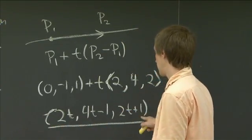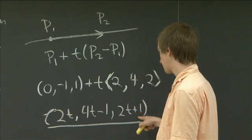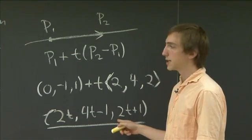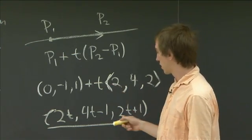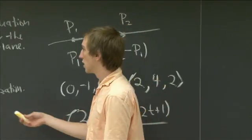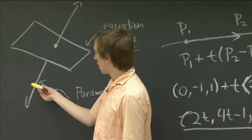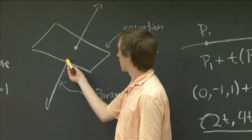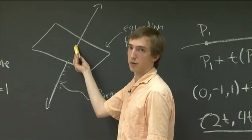So this here is a parametrization of the line. So as we vary T, now walking back over to our picture, as we vary T, we're going to just be listing all the points on the line. And we're going to ask for which point are we actually contained in the plane.